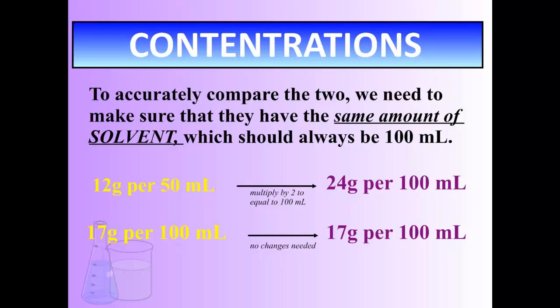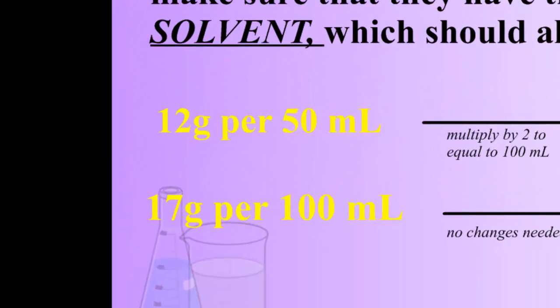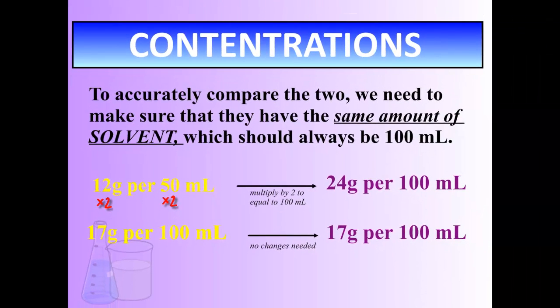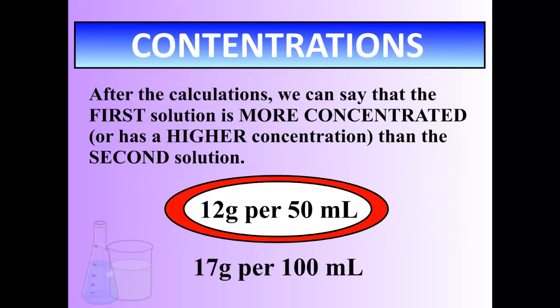If we look at the first concentration, 12 grams of solute per 50 mils of solvent. If we need to change that to be out of 100 mils of solvent, we multiply it by 2. And it has to be multiplied by 2 on the solute side as well. So then we get our 24 grams per 100 mils. The bottom one doesn't have to be changed. It's already per 100 mils. So now we can say that this one, the first one, has more solute dissolved than solvent. Therefore, it has a higher concentration.